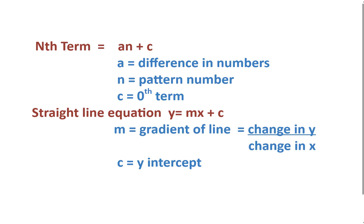So the formula for the nth term is a n plus c where a is the difference in numbers, n is the pattern number and c is the zeroth term. So you're going back one. In a straight line equation, y equals mx plus c where m is the gradient of the line and you find that with calculating the change in y divided by the change in x and c is your y-intercept. And if you notice the c and the c are exactly the same. Let me show you.